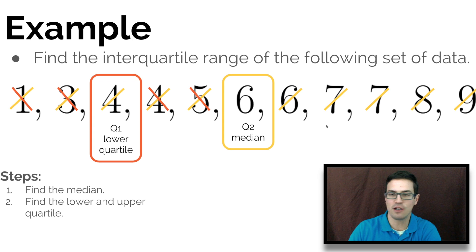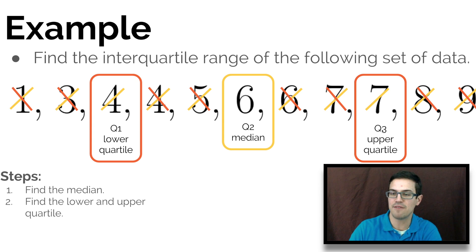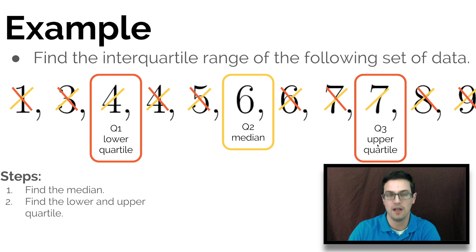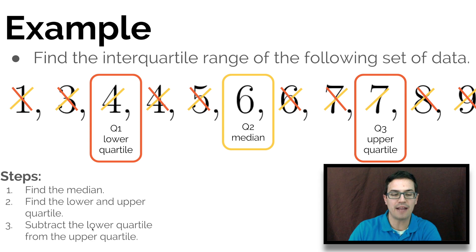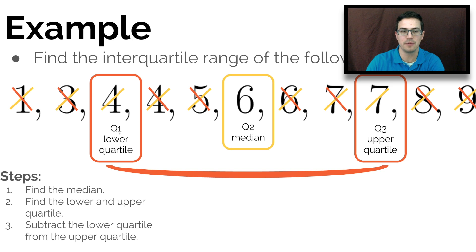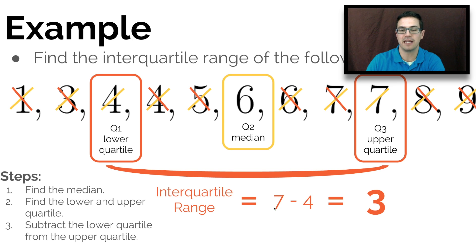Then I do the same thing for the upper quartile: get rid of the 6 and the 9, then the 7 and the 8, and we're left with 7, which is Q3 or the upper quartile. Next, subtract the lower quartile from the upper quartile: the interquartile range equals 7 minus 4, which equals 3. So 3 is our interquartile range for this set of data.